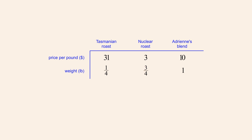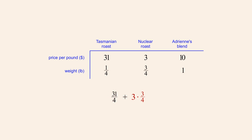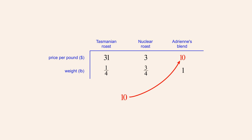We can check our calculations by multiplying the price per pound for each of the two coffees times their calculated weights, and check to see if the total cost for a pound of blend comes to $10. The cost of the Tasmanian roast in one pound of Adrienne's blend is $31 times one quarter pound, and the cost of the nuclear roast is $3 times three quarters pound. Multiplying 31 times one-fourth we get thirty-one-fourths, and 3 times three-fourths is nine-fourths. Adding these two fractions we get 31 plus 9 fourths, or 40 fourths, which equals 10. Since the total cost is $10, our calculations appear to be correct.